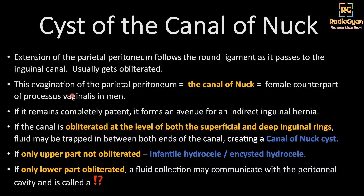This evagination of the parietal peritoneum in females is known as the canal of Nuck. If it remains completely patent, it is an avenue for indirect inguinal hernia. If the canal is obliterated at its upper and lower ends but the middle portion remains patent, fluid can accumulate there and give rise to a canal of Nuck cyst. This is a benign pathology and may or may not show enhancement and loculations — nothing to be worried about. It's a 'touch me not' lesion unless the patient is symptomatic.